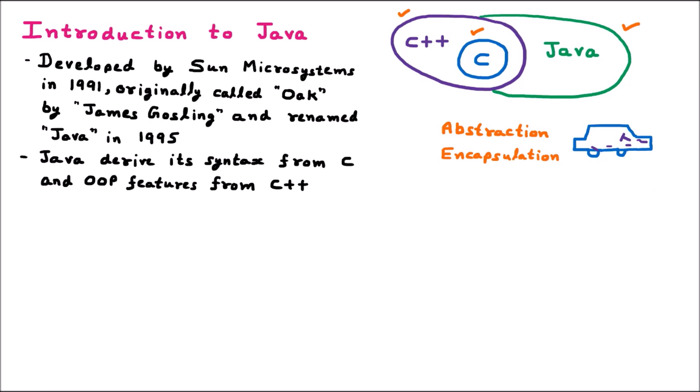The third feature is inheritance. Inheritance provides reusability. Let us suppose that we have some class and that class's complete features we are going to derive into another class — that is called inheritance. Let's say if I am designing a window, there is already code present for a clock. That clock code I am taking — meaning already available code I am using. That is called inheritance. Similarly, if I need a start menu, that code is already available and I am taking it. So taking existing code into another is called inheritance.